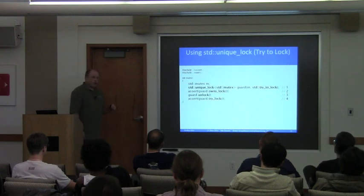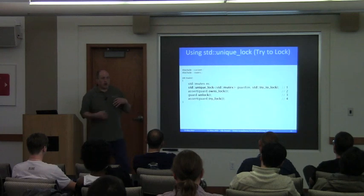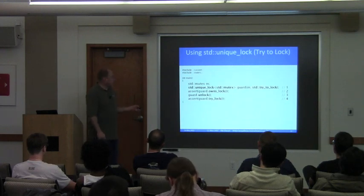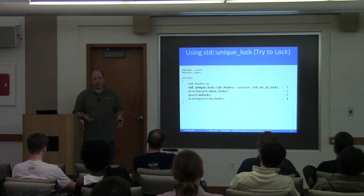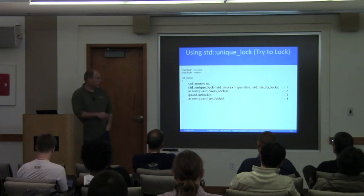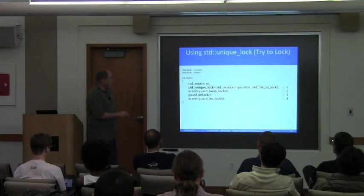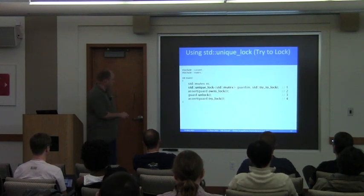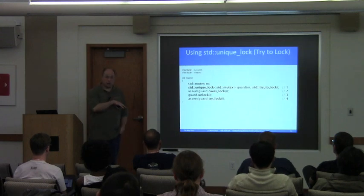There's also std::try_to_lock: the constructor simply calls try_lock on the lockable. If it succeeds, it owns the lock; if it fails, it doesn't — but it doesn't fail construction. In this particular example there's no contention, so we get the lock and owns_lock returns true. We can unlock it and then try_lock will succeed. This constructor with std::try_to_lock is just like calling try_lock after using defer_lock in the constructor.